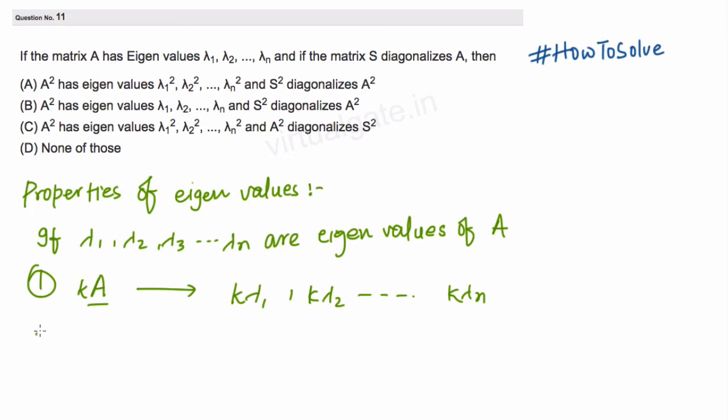The second property is also very similar. For the same given matrix A with eigenvalues λ₁, λ₂, up to λₙ, if we find the eigenvalues of A inverse, then as expected, the eigenvalues will be reciprocal: 1/λ₁, 1/λ₂, and up to 1/λₙ.